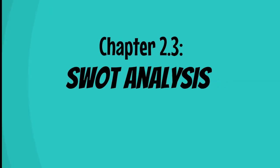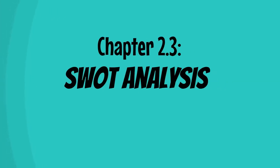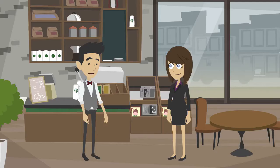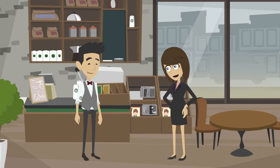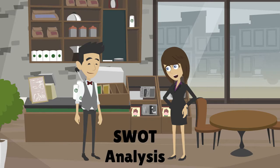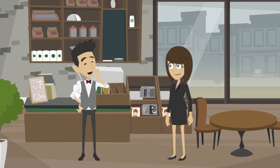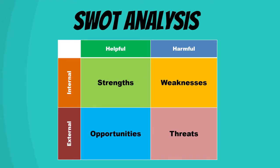Chapter 2.3: SWOT Analysis. You mentioned a second method for Situation Analysis. Yeah, you can use a SWOT Analysis to understand your business situation very well. What does SWOT mean? SWOT stands for Strengths, Weaknesses, Opportunities, and Threats. I see.